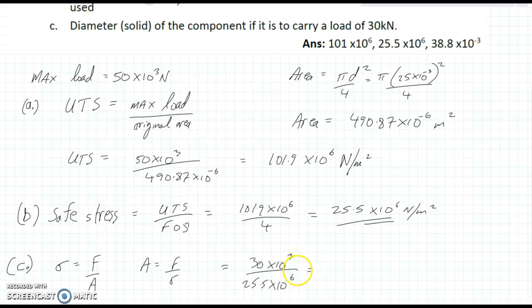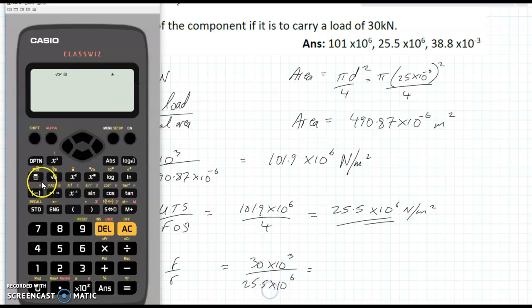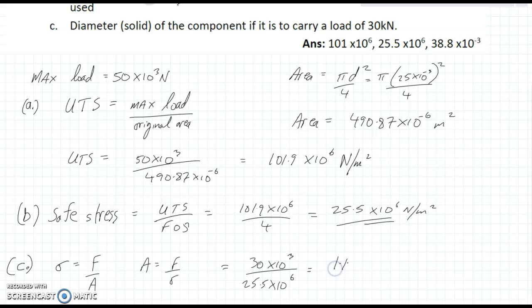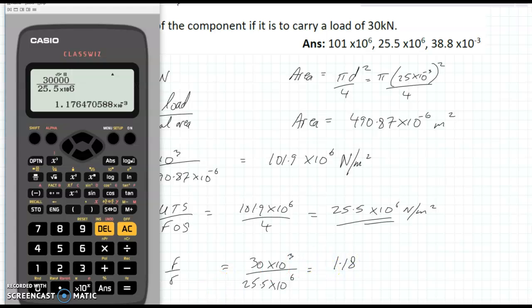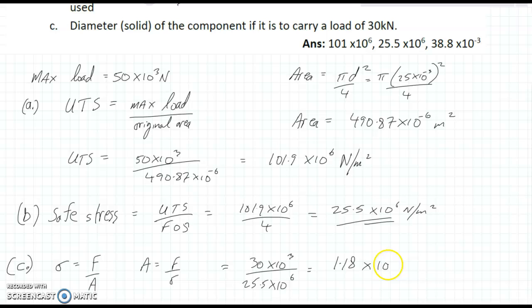And, that calculation there. Well, let's do it. Action key. 30,000 on top. And, downstairs we have 25.5 by 10 to the 6. Press equals. And, ng that. And, we get 1.18 to two decimal places. 1.18 by 10 to the minus 3. That's area. That's square meters. That's the square meters that the component has to be. But, we're looking for the diameter.